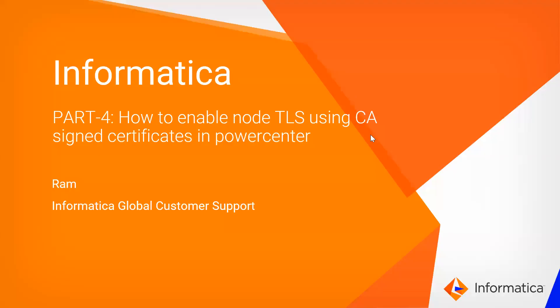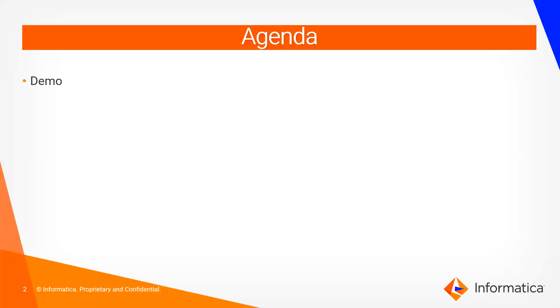Hi everyone, this is Ram from Informatica Global Customer Support. In this video we'll see how to enable node-level TLS using CA-signed certificates in PowerCenter. This is a Part 4 video. In the Part 3 video I talked about how to enable Admin Console HTTPS using CA-signed certificates. The main agenda of this video is to start with a quick demo, and while showing the demo I will cover the theory as well.